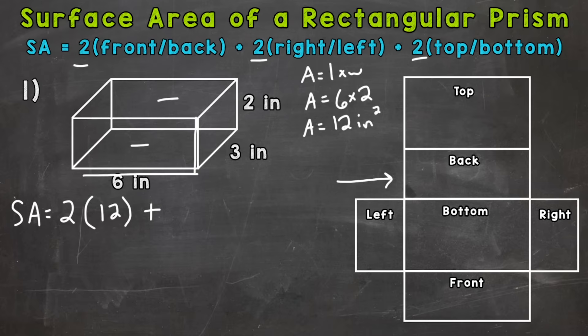So as of right now, we have 12 square inches here for the area of the front and the back. So let's do right and left. So we'll pick the right side here, the right face. And we have a 3 by 2. So area equals length times width.